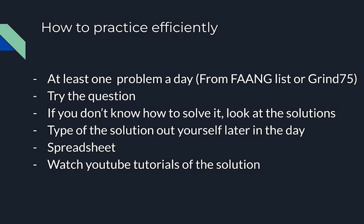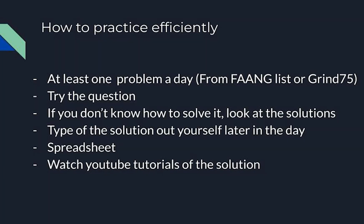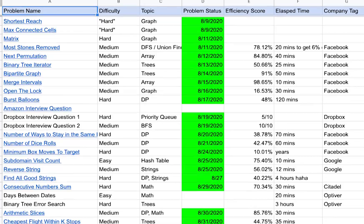Now, how do you practice efficiently? Go to the LeetCode FAANG list or Grind 75 and do one problem a day. Try the problem, and if you don't know how to solve it - which is gonna be super common starting out - look at the solution. Figure out how to solve it based on the solution, then give it an hour or so and type the solution out yourself by the end of the day. This is not so you can memorize the specific solution - you want to get a sense of how to think about the problem by seeing how other people solved it. The most important part is consistency: do at least one problem each day, and eventually you get to a point where you don't have to look at solutions anymore. Also keep track of which problems you solve in a spreadsheet - I'll leave a template in the description.